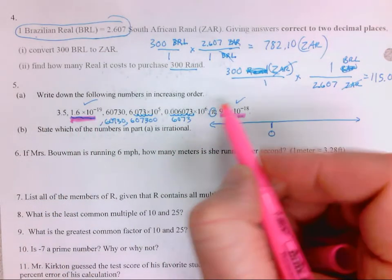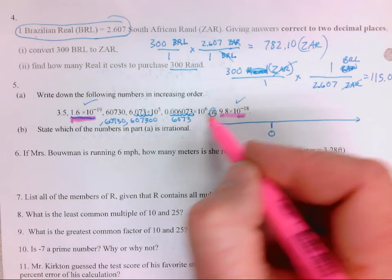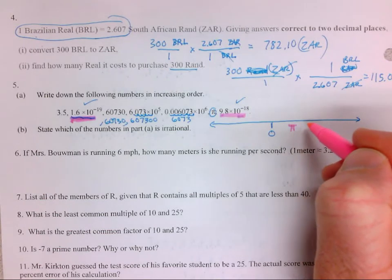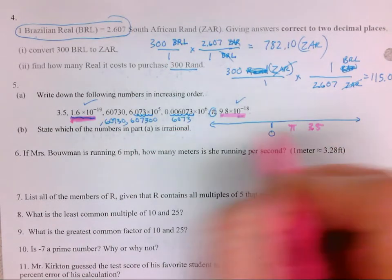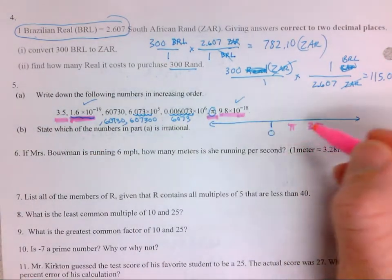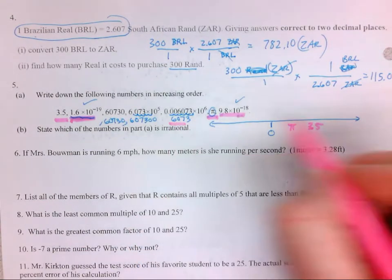Then this one, oops, sorry, this was the smallest. Sorry, 1.6 times 10 to the -19, this is the second. Okay. Pi is a little bit bigger than... so pi is right here, 3.14. This is 3.5.